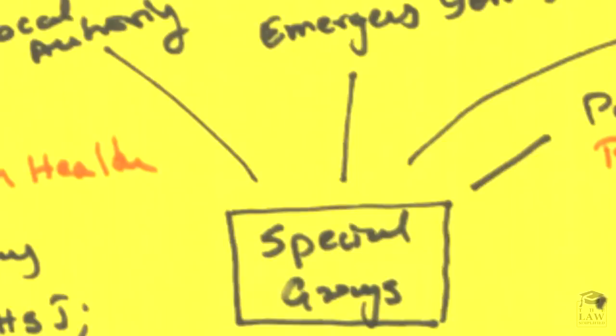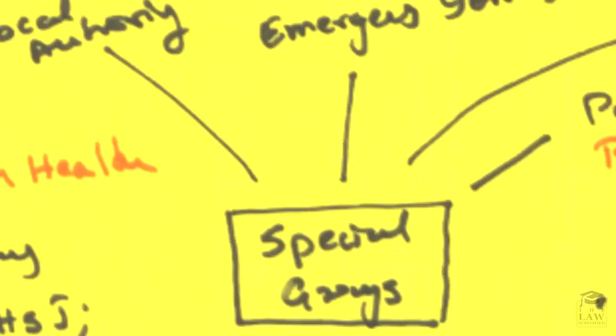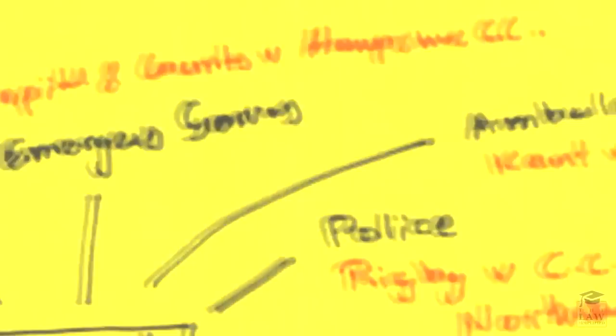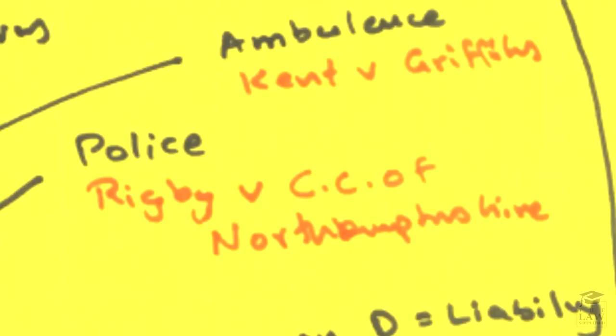However, one anomaly in this regard is where special groups are involved. And what I mean by special groups are people who are either local authorities, as in the case of X v BCC, emergency services such as we looked at earlier, Capital and Counties v Hampshire County Council, ambulance services like Kent v Griffiths, police such as Rigby v Chief Constable of Northamptonshire.